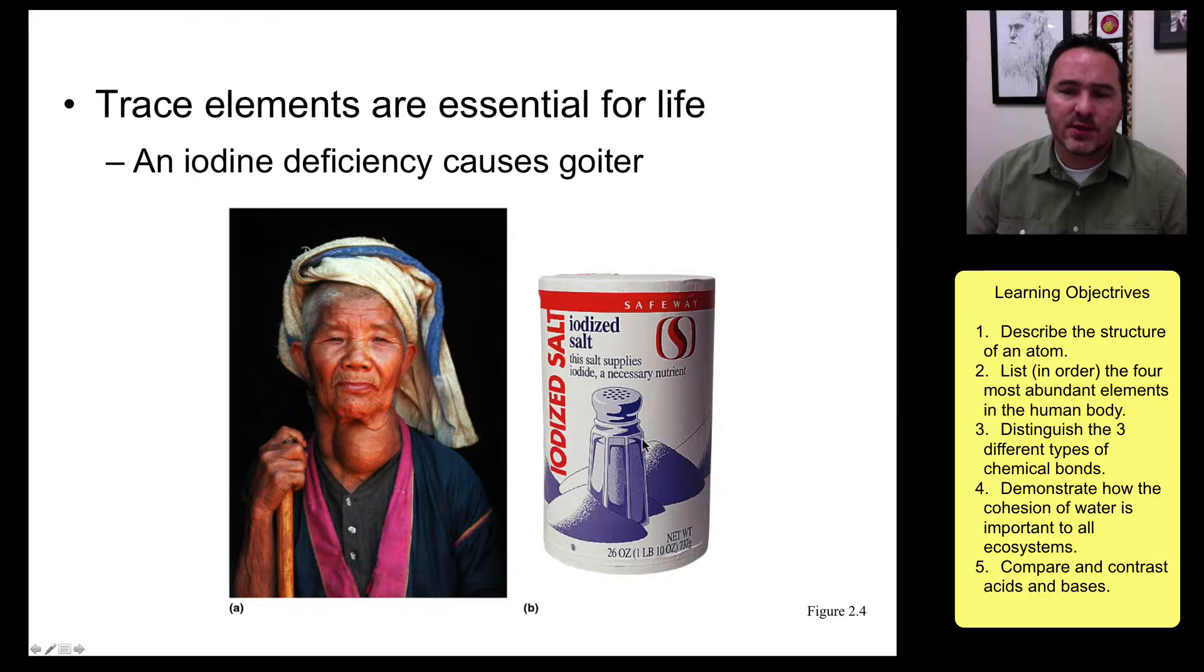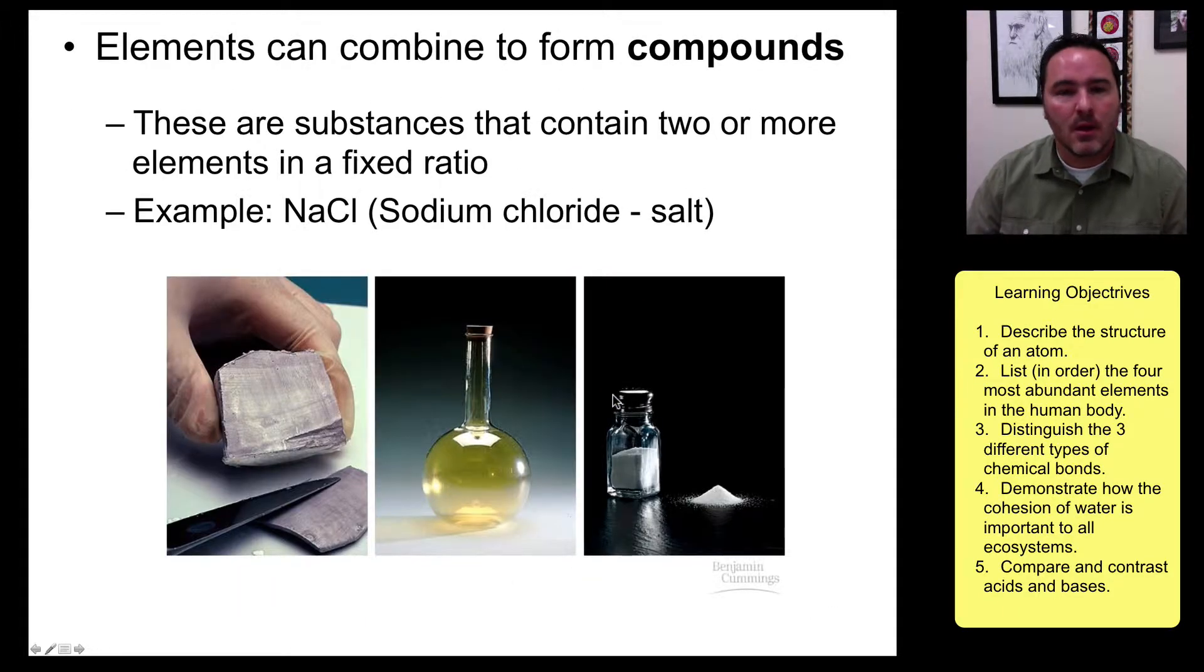Now, of these trace elements, they are also really important, but you need them in small quantities. If you do not get the necessary amounts, you can develop problems. For example, an iodine deficiency can cause goiter, and so we have salt that's been iodized. Now, whenever two elements or two or more elements come together in a fixed ratio, we call that a compound. So here is an example of a compound. Sodium and chlorine came together to form sodium chloride or salt, table salt.